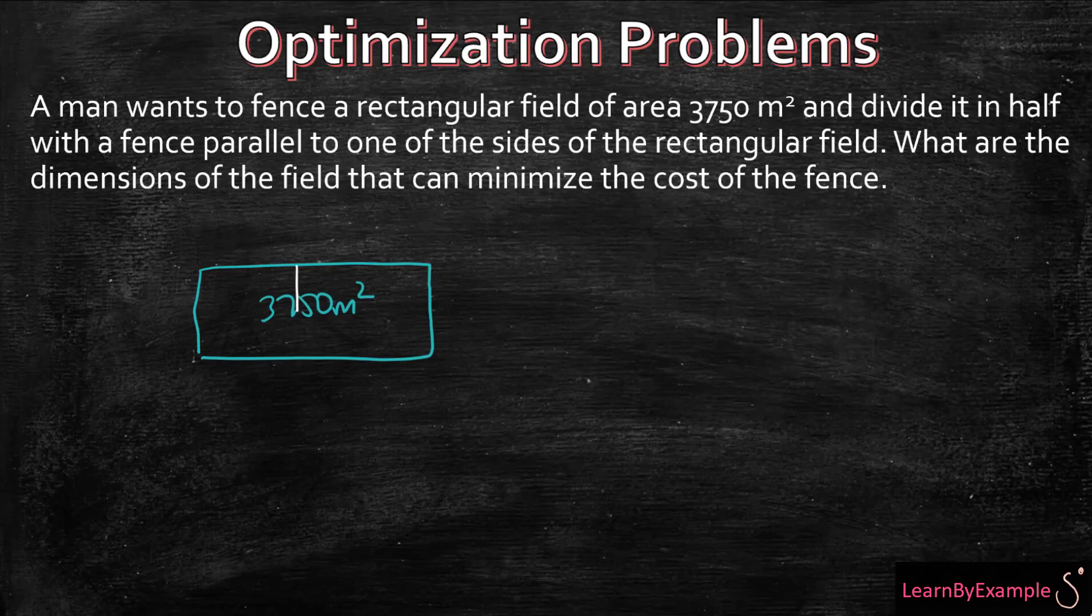Let's erase that. You know that there's going to be a fence right through the middle. What are the dimensions of the field that can minimize the cost of the fence? Remember, the first issue is: are we dealing with area or are we dealing with perimeter?